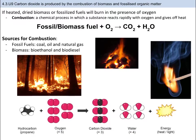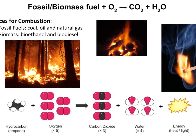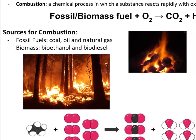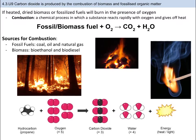Combustion is one of the fluxes of the carbon cycle, and humans add to its effects when we burn carbon. Combustion is a chemical process in which a substance reacts rapidly with oxygen and gives off heat. The reactants are the fuel source and oxygen; the products are carbon dioxide and water. Sources can be broken into fossilized fuels — peat, coal, oil, and natural gas — and biomass, which includes biodiesel, bioethanol, and carbon-containing materials like trees. So forest fires also count as combustion. In short, combustion transfers carbon dioxide back into the atmosphere.